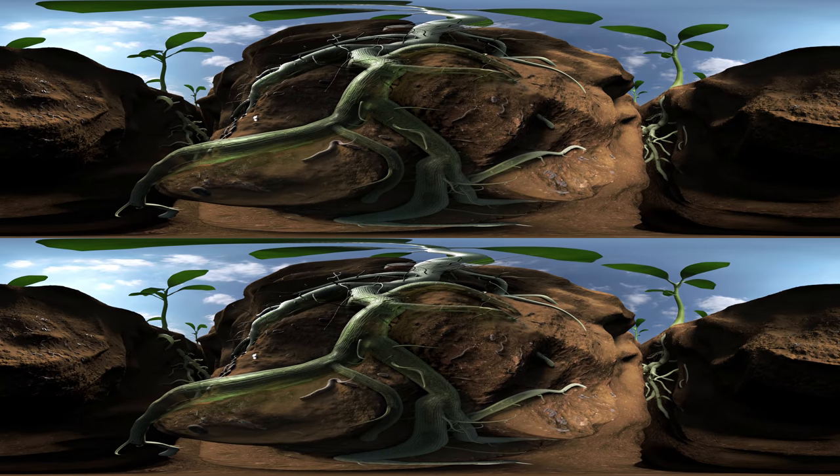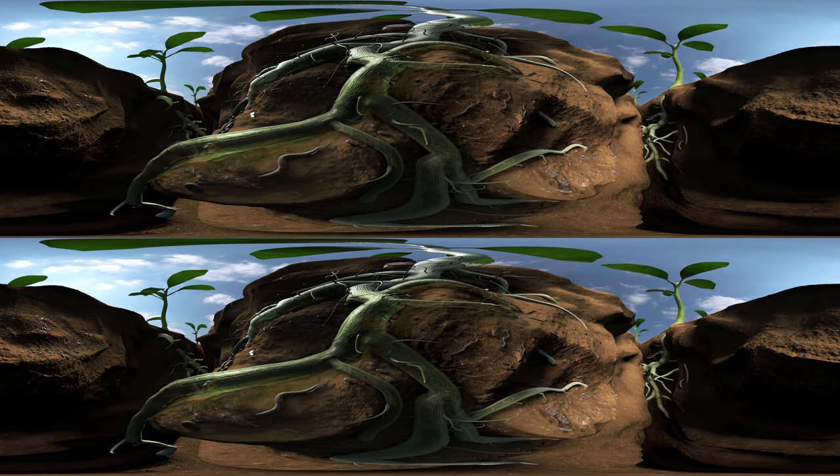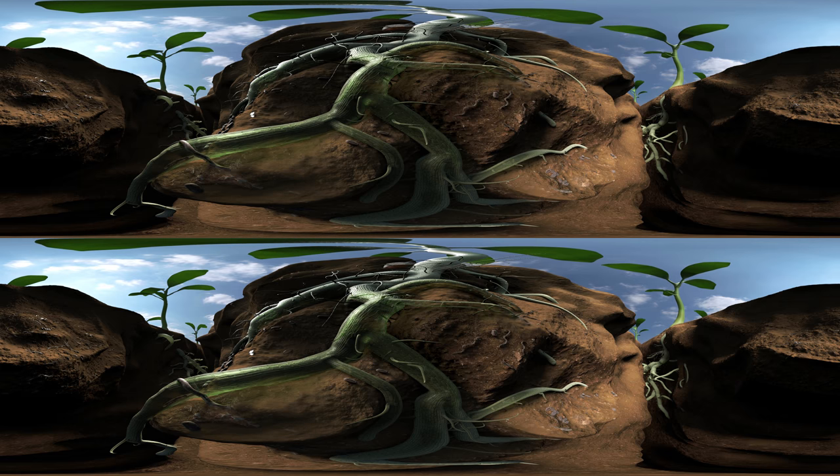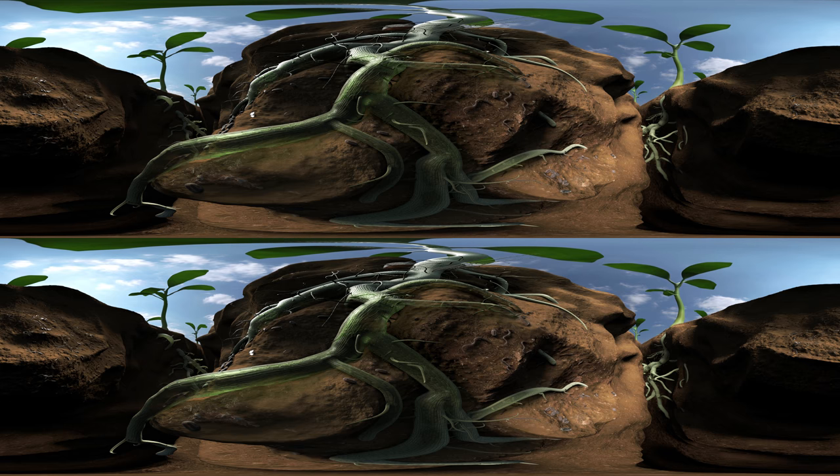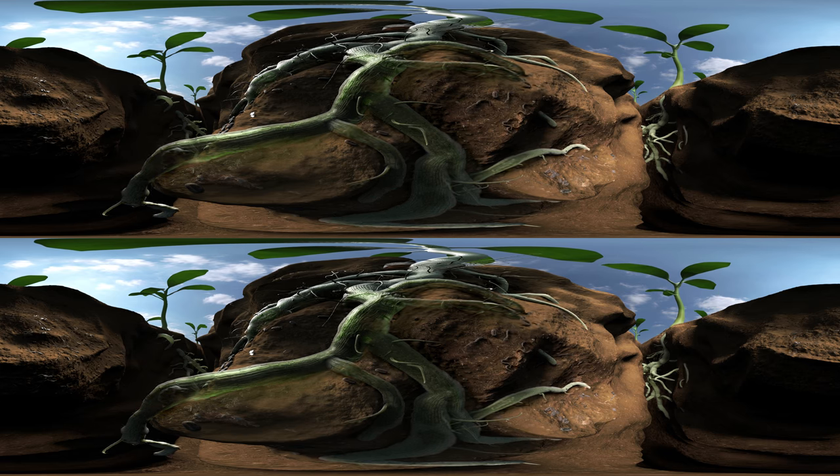Nematodes penetrate the root, start to reproduce, and cause root galling. They suck water and nutrients from the root system. Infested plants suffer and show poor growth.